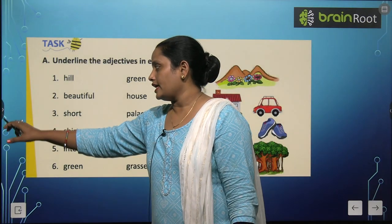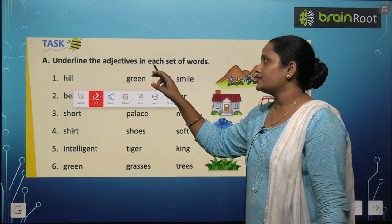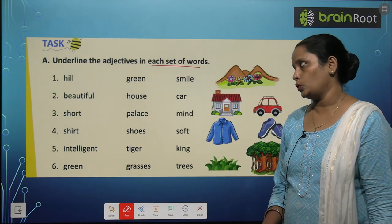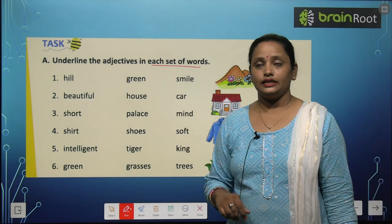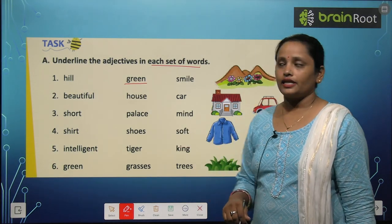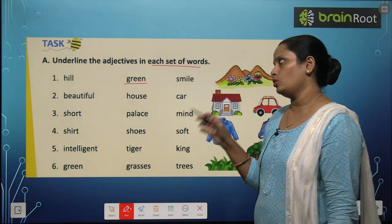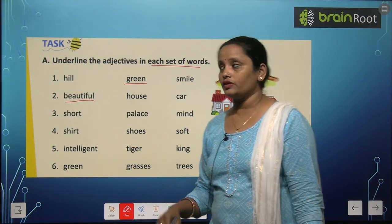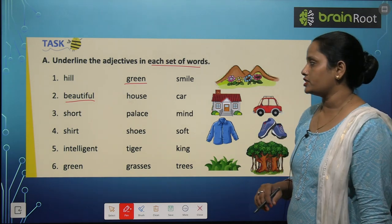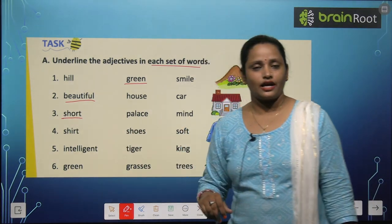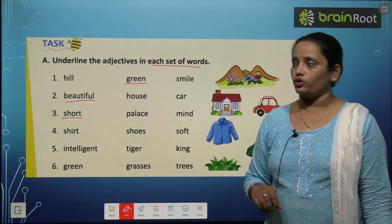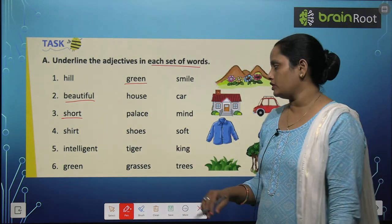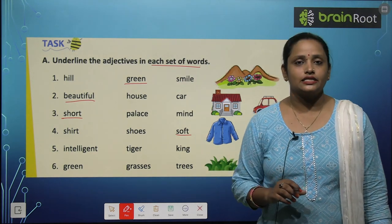Now let's do exercise A. Here we have to underline the adjectives in each set of words. Hamein adjectives ko underline karna hai. Hill — no, ye toh ek naming word hai. Green — yes, jaldi underline kar do. And smile — this is also not a describing word. Beautiful — yes, ye ek describing word hai. House aur car toh naming words hai. Short — ye ek describing word hai. Palace aur mind — dono hi naming words hai. Shoe bhi ek naming word hai, aur yahan pe soft ek describing word hai.